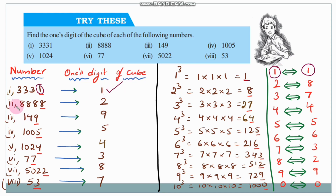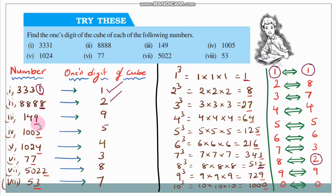For 8888: the number ends in 8. Since 8³ = 512, the units digit is 2. So the units digit of 8888³ is 2.